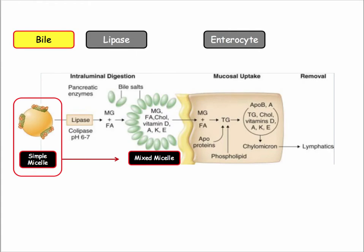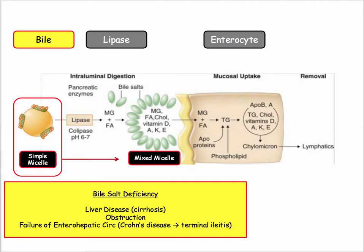To form the simple micelle, we need bile salts. Fat malabsorption may result from diseases that deplete bile salts — common players include cirrhosis, cystic fibrosis, and primary biliary cirrhosis. Obstruction to bile flow can lead to diarrhea, but those conditions will present with jaundice on the boards. The major cause of bile salt deficiency with resultant fat malabsorption is Crohn's disease — specifically knocking out the terminal ileum, which leads to failure of the enterohepatic circulation of bile.